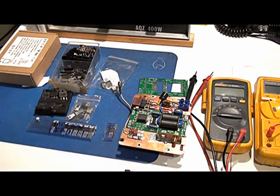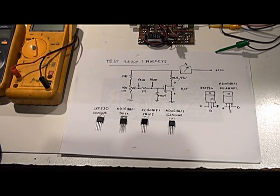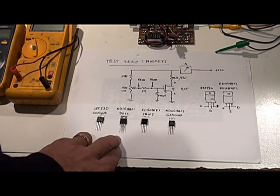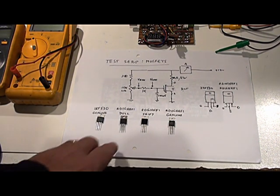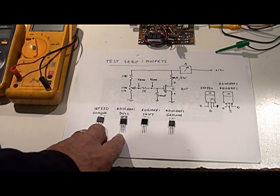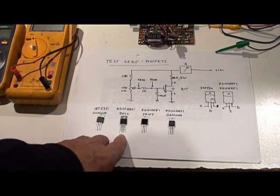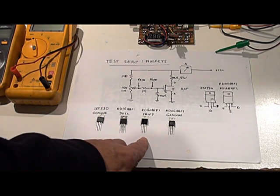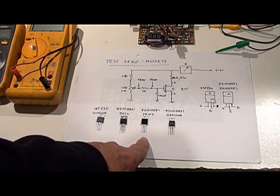This is one here that I put together. One of the things I found when buying devices off eBay was that you can end up with fake devices. For example, I bought some RD16HHF1s with a dull surface from Australia from an eBay seller, they turned out to be fake. And I bought some RD16 from overseas, eBay seller, and they also turned out to be fake.